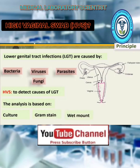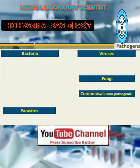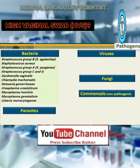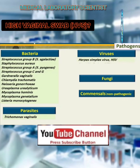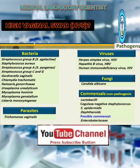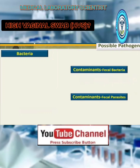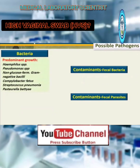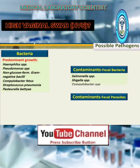Pathogens include bacteria, parasites, viruses, fungi, and commensals. Possible pathogens include bacteria. Contaminants include fecal bacteria and fecal parasites.